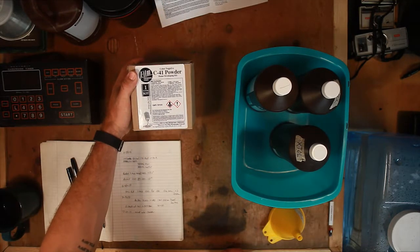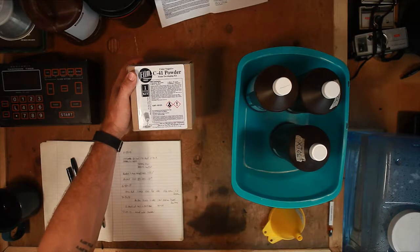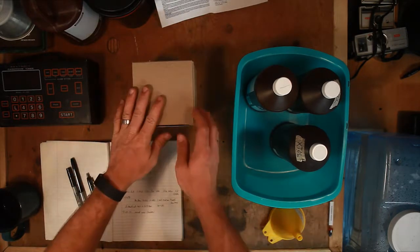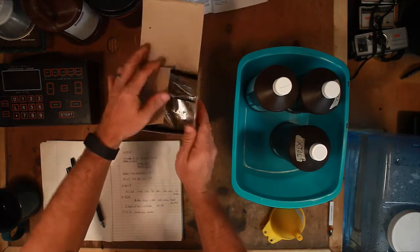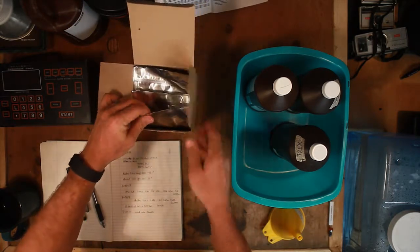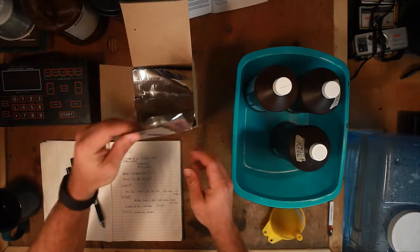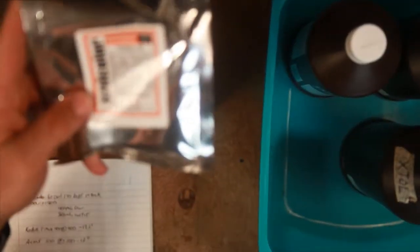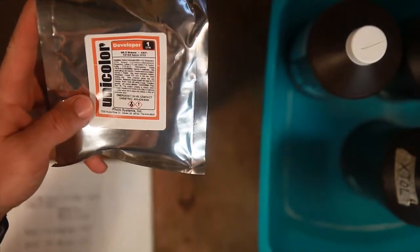So what we have here is a kit basically for mixing up and developing color film. We're going to start by pulling these chemicals out of the box and getting them mixed up into their containers. Fairly similar to how black and white film works, we have a developer and we're mixing that in with one liter of water.